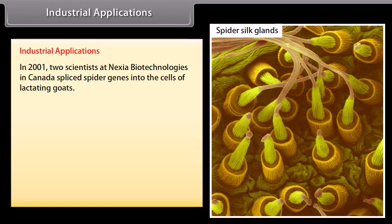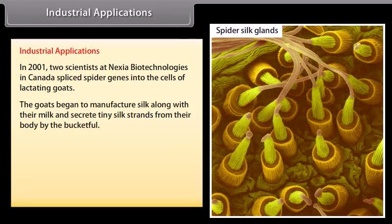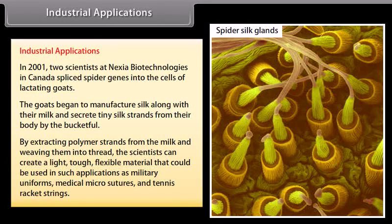In 2001, two scientists at Nexia Biotechnologies in Canada spliced spider genes into the cells of lactating goats. The goats began to manufacture silk along with their milk and secrete tiny silk strands from their body by the bucketful. By extracting polymer strands from the milk and weaving them into thread, the scientists created a light, tough, flexible material that could be used in applications such as military uniforms, medical micro-sutures, and tennis racket strings.